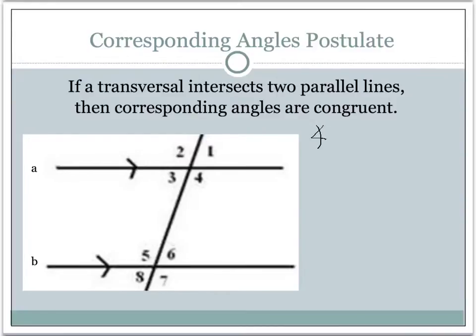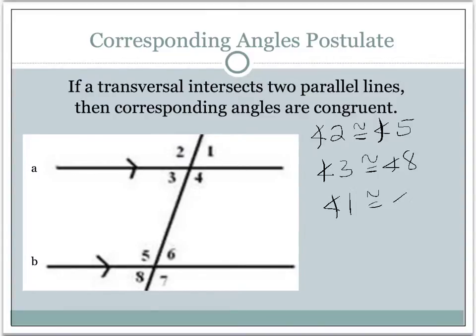So in this case, angle two is congruent to angle five, angle three is congruent to angle eight, angle one is congruent to angle six, and angle four is congruent to angle seven. Those are the corresponding angles, and they are congruent because we had a transversal intersecting two parallel lines.